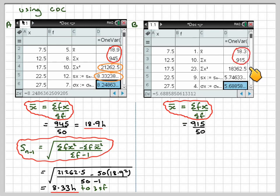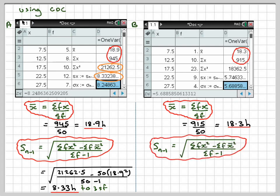Again, putting the information in, we get the sum of fx squared. In this case, minus 50 times 18.3 squared, over 50 minus one, which gives me 5.75 to three significant figures, which is this number here.